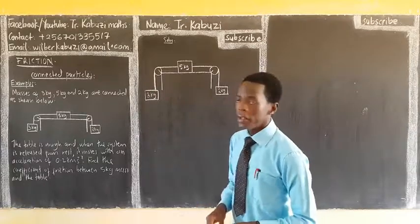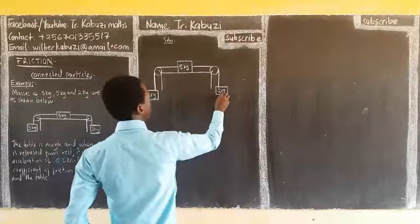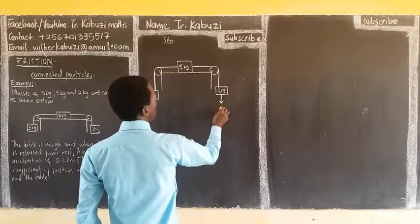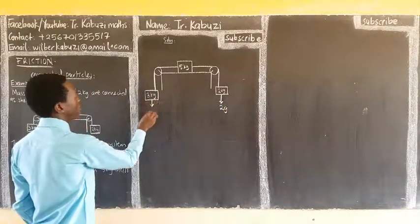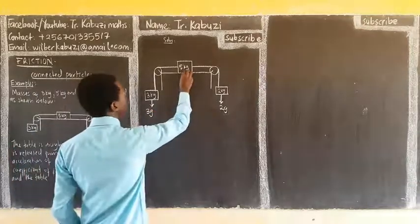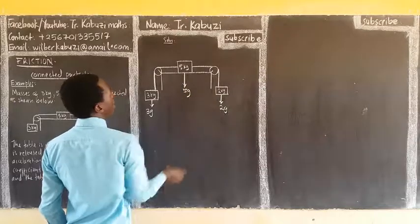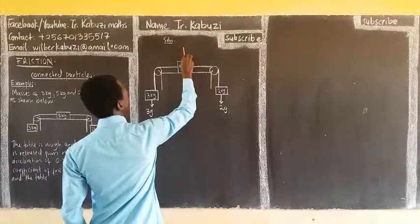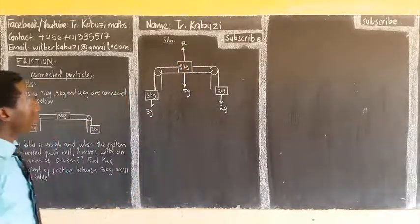We start by resolving, I mean by putting in our forces. This one first of all is going to have a weight, we get the mass times gravity. This one is also going to have a weight, we get the mass times gravity. These are the masses we have to do. Also, this is going to be 5G. Of course, it's going to be having a reaction. So, there is going to be a reaction there.